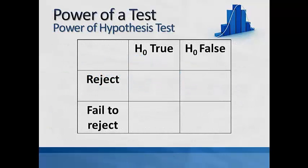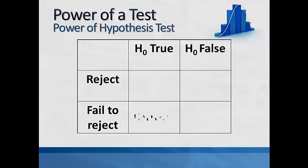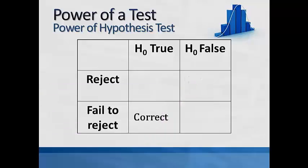Now let's take a look at a table. Suppose H0 is true — what if we decide to fail to reject it? Well, we made a correct decision. Now suppose H0 is false — what if we decide to reject it? Once again, we made a correct decision.